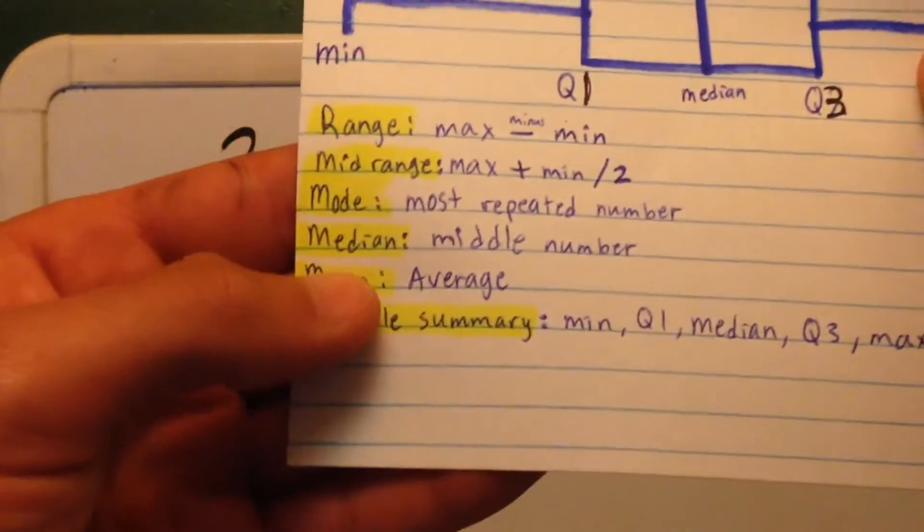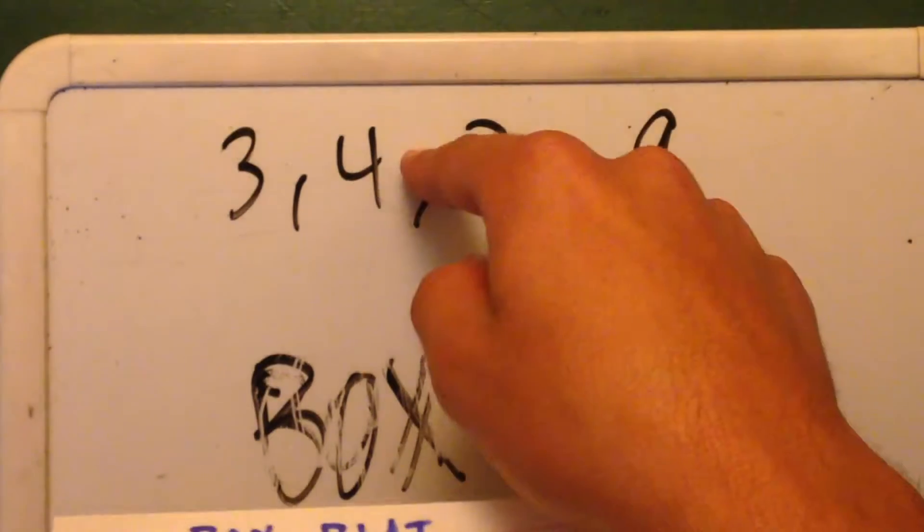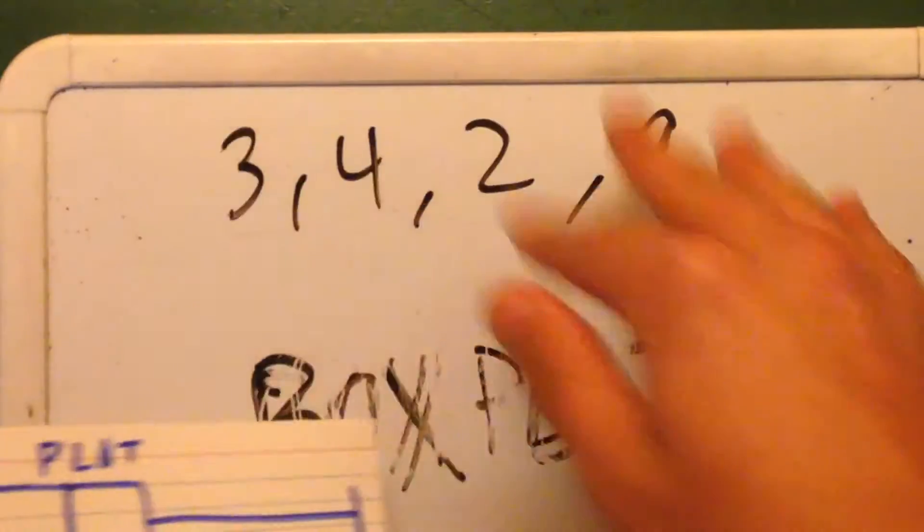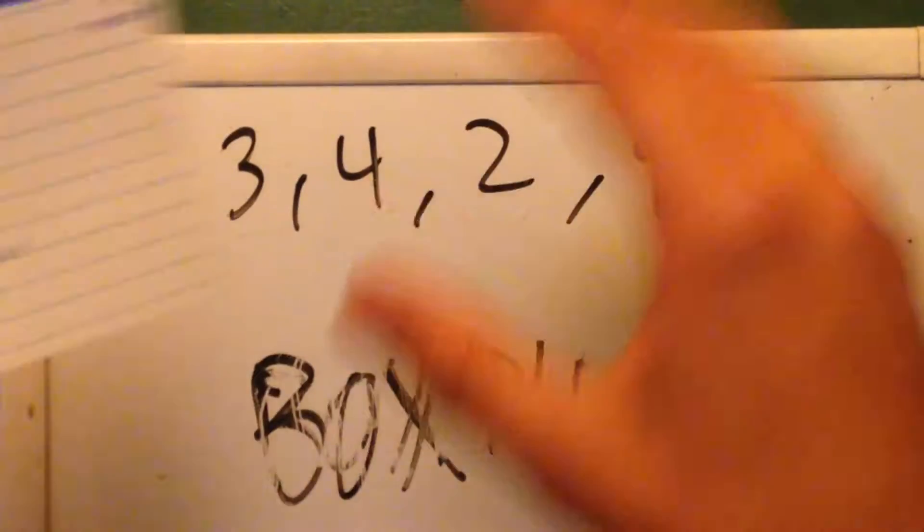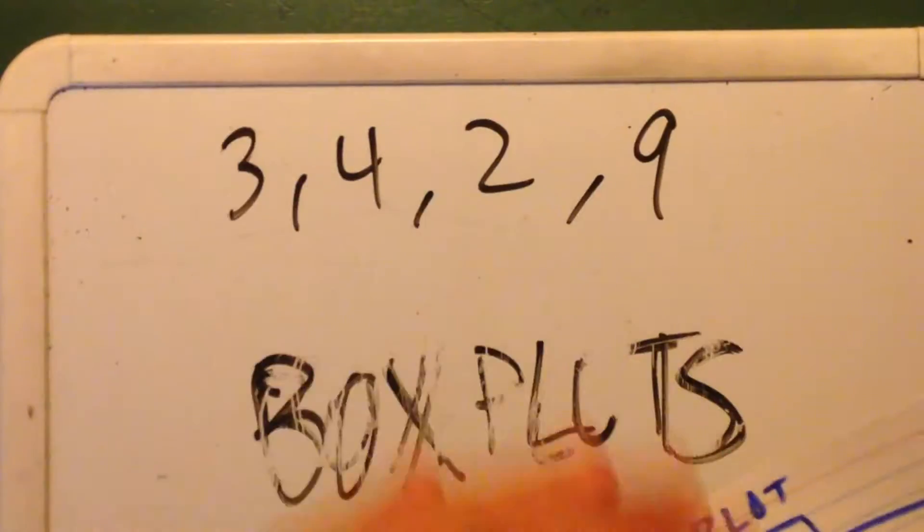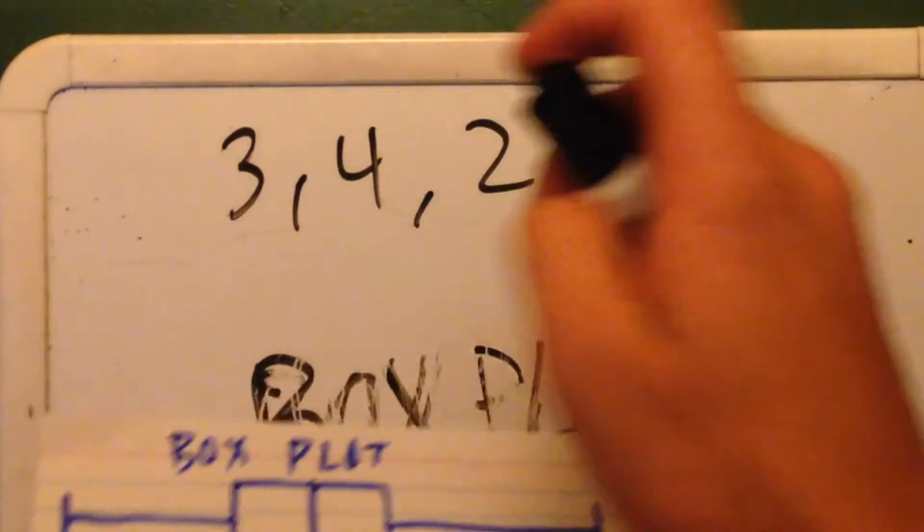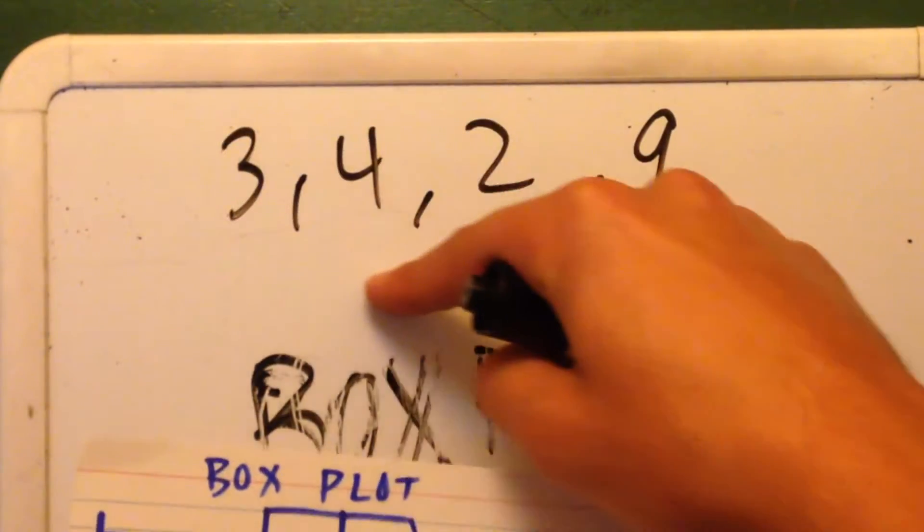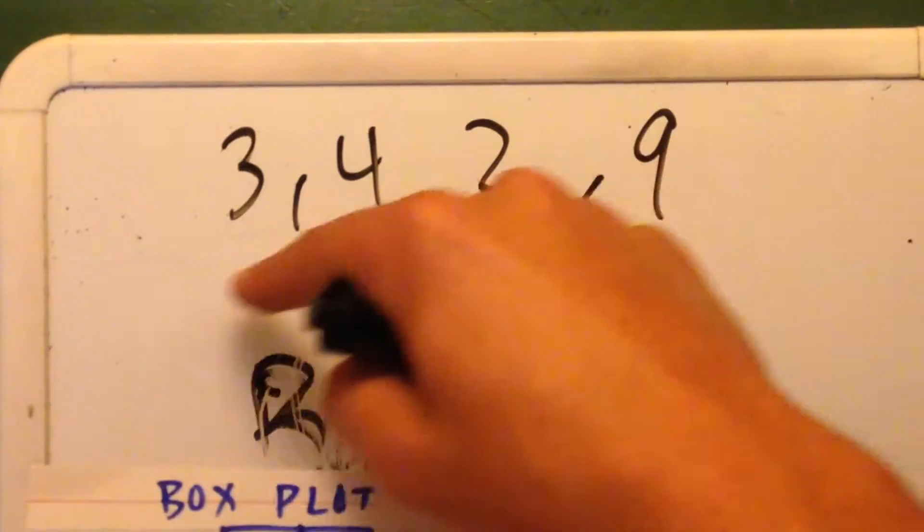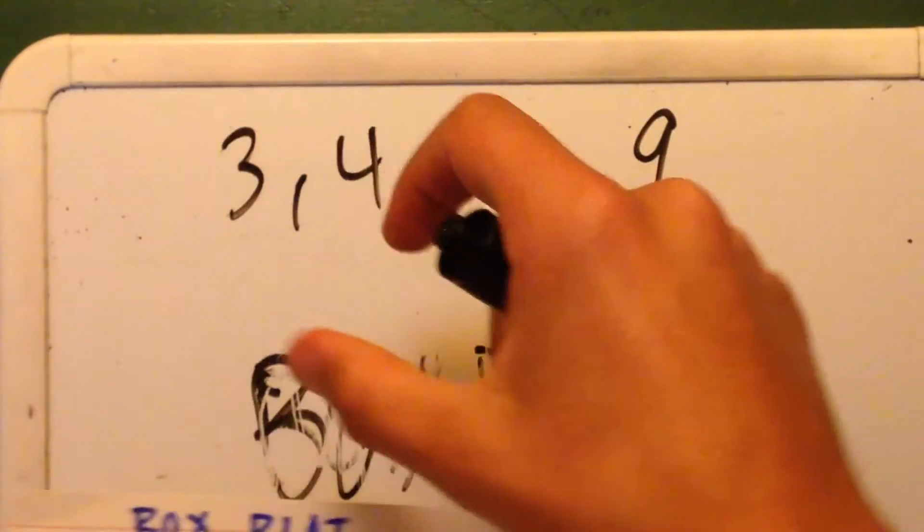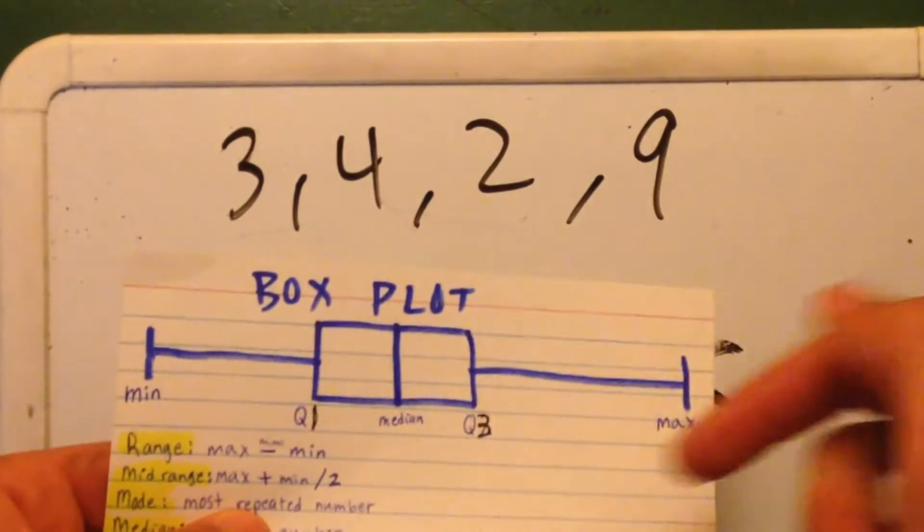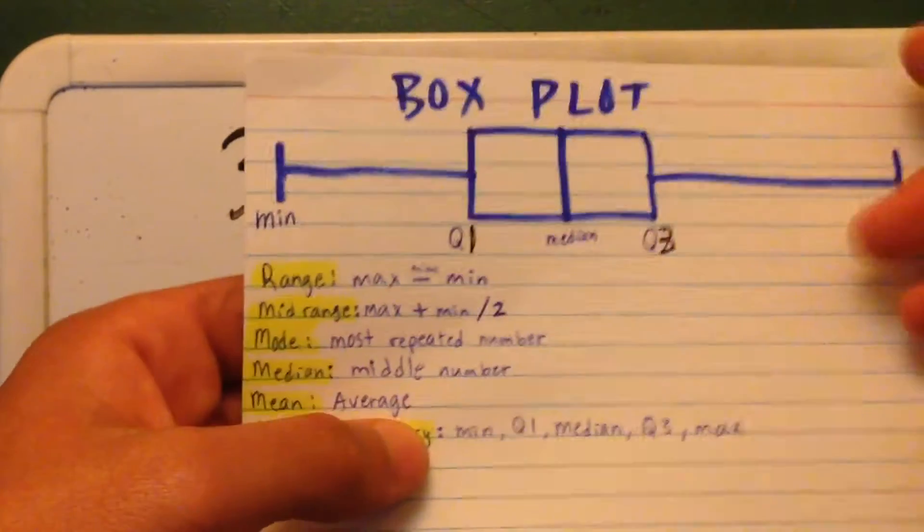The median is the middle number. In this case we said it's 3. Well, first you always want to arrange them from least to greatest, and then you'd find all those. So I'm just going too quick right now. But just always keep in mind that you always want to set them from least to greatest. So 2, 3, and then 4, then 9. And then you find the quartile 1, quartile 3, and the median. That's how it's supposed to be done.